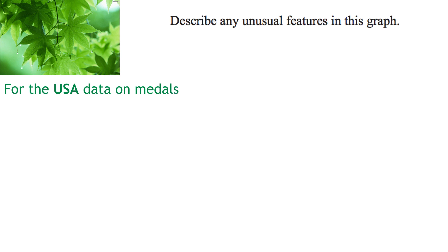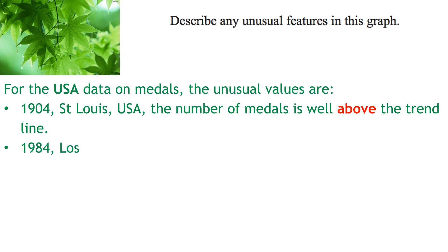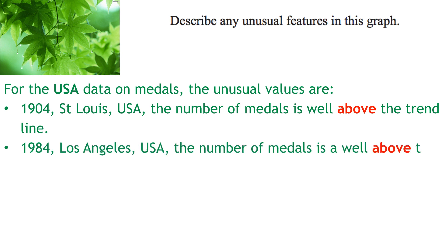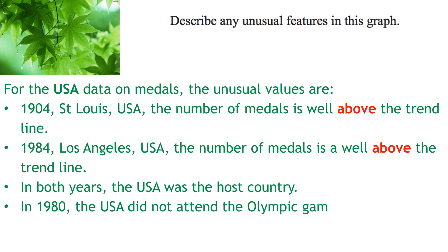For our US data on medals, the unusual values are: in 1904 St. Louis, the number of medals is well above the trend line; in 1984, the number of medals is also well above the trend line. In both of these years, the US was the host country, so they achieved exceptionally high numbers of medals when hosting. There's also 1980, when they did not attend the Olympic Games — that is another unusual value.